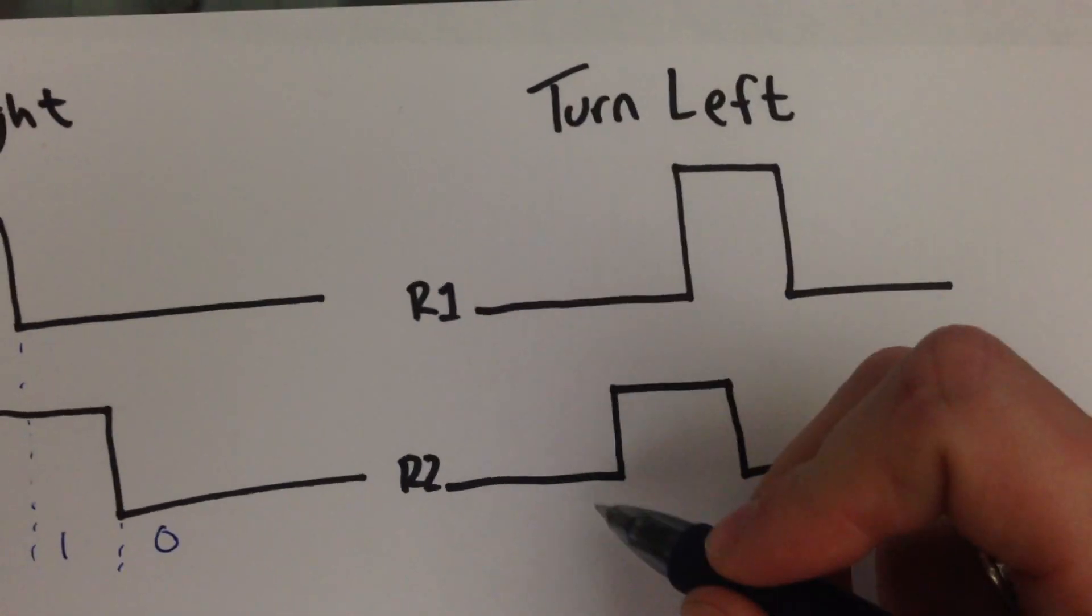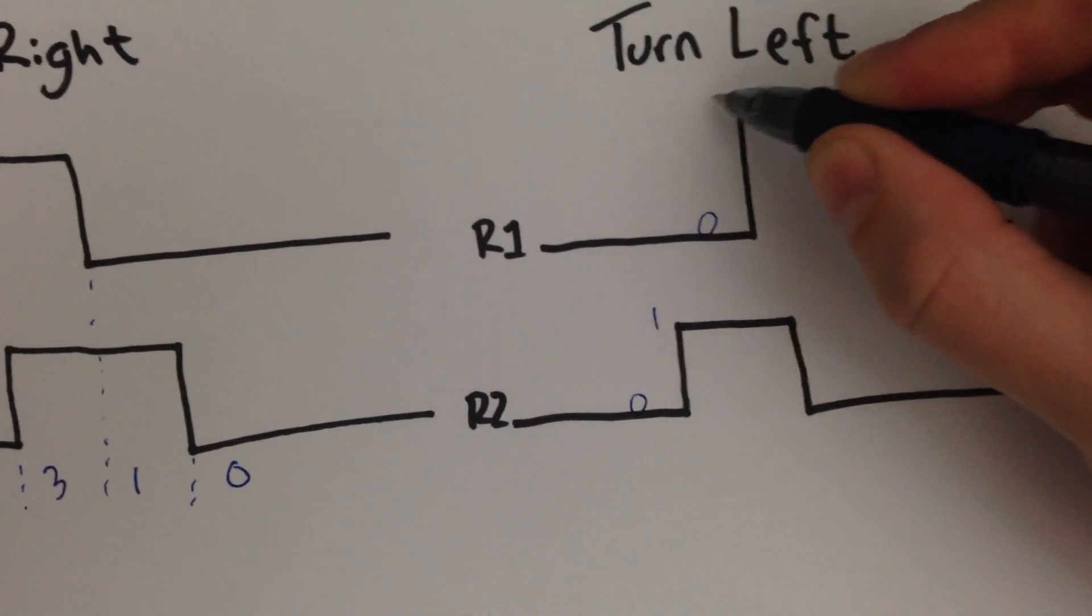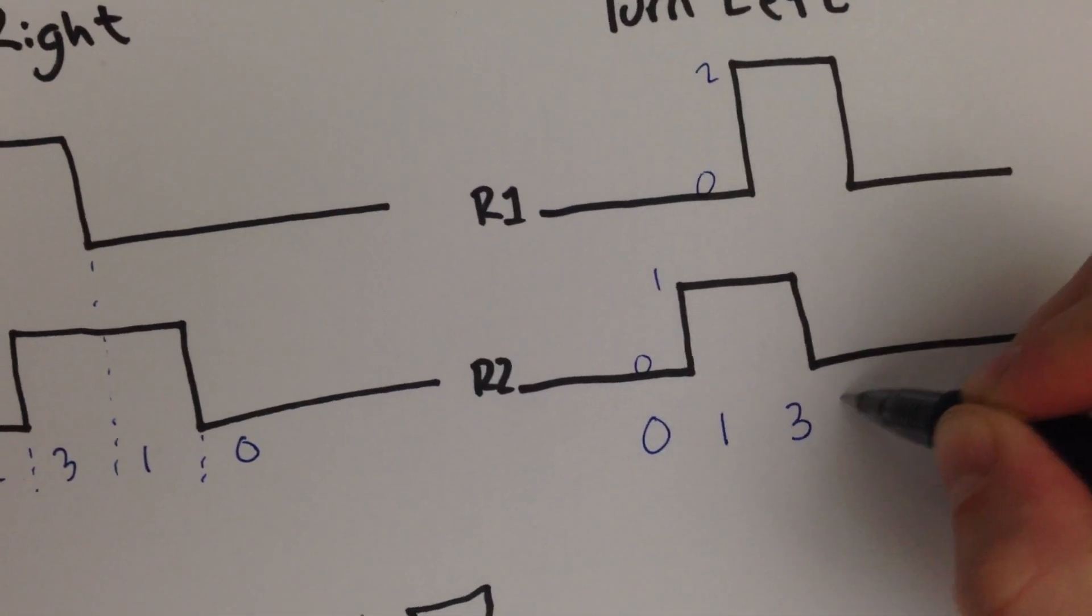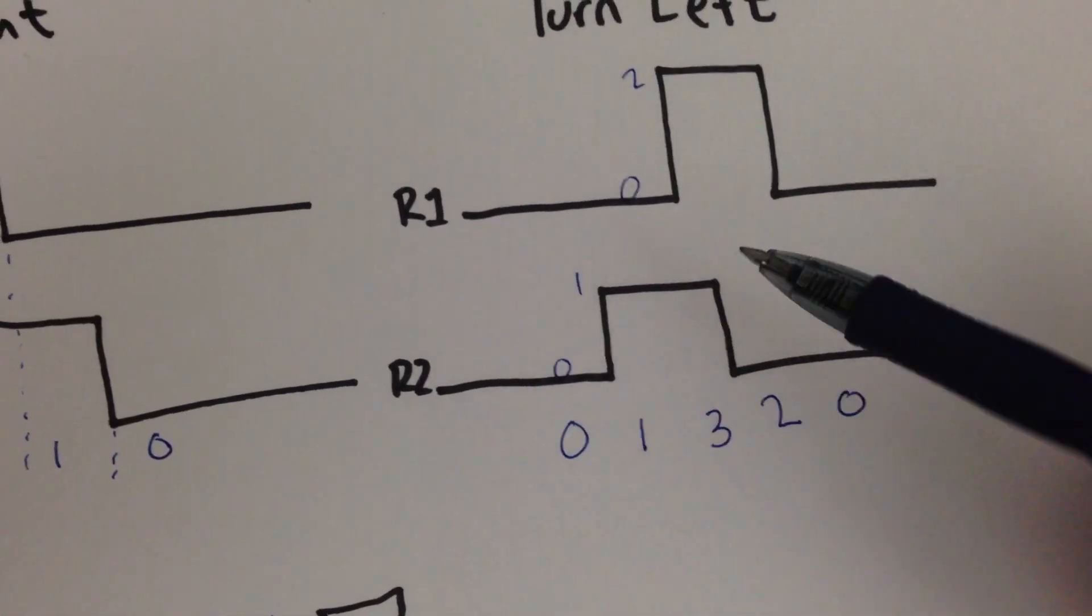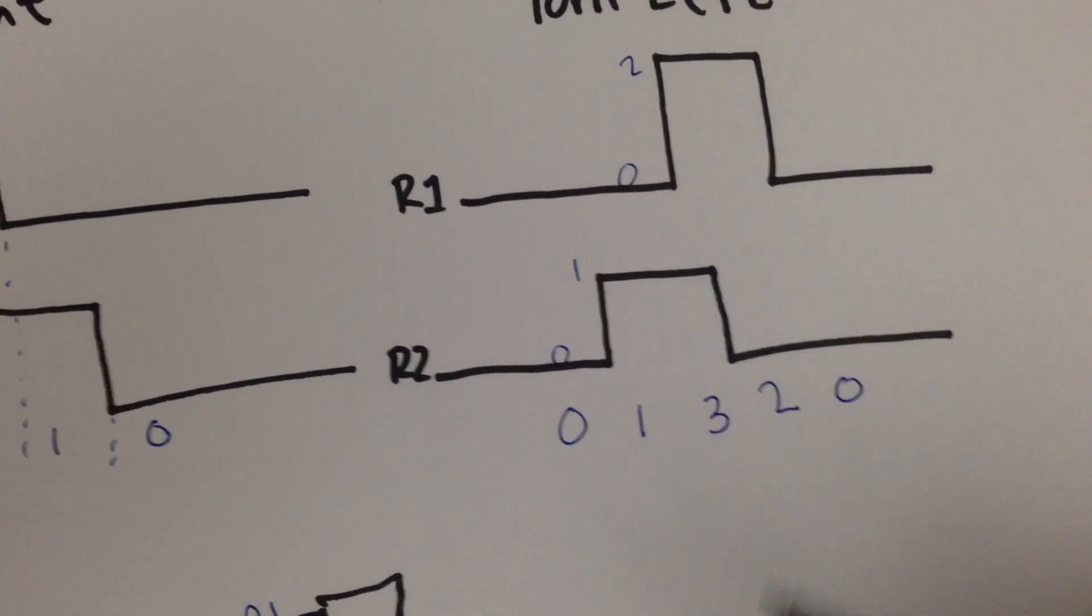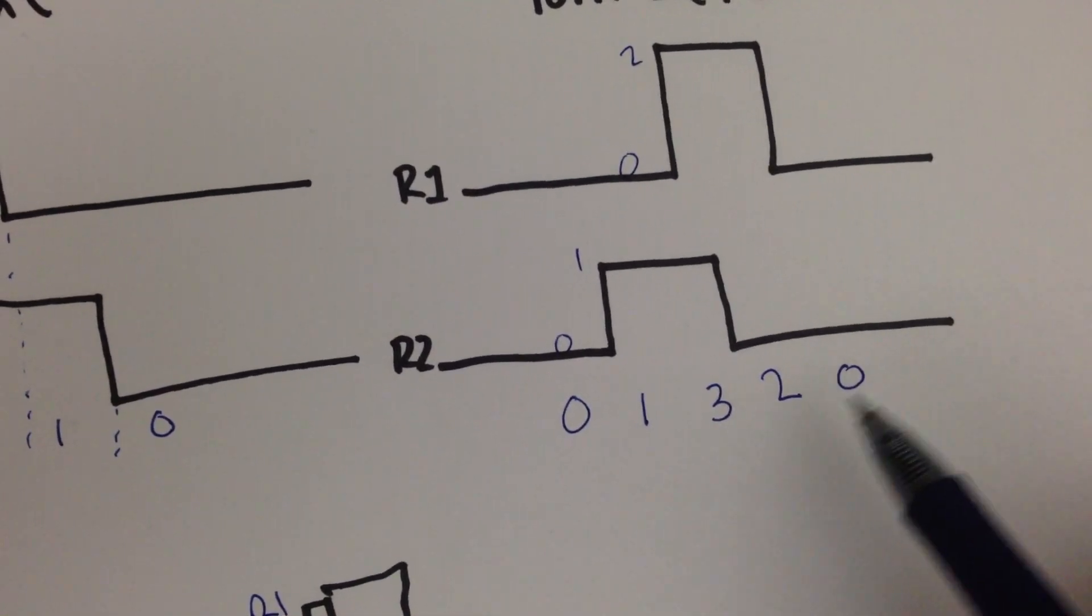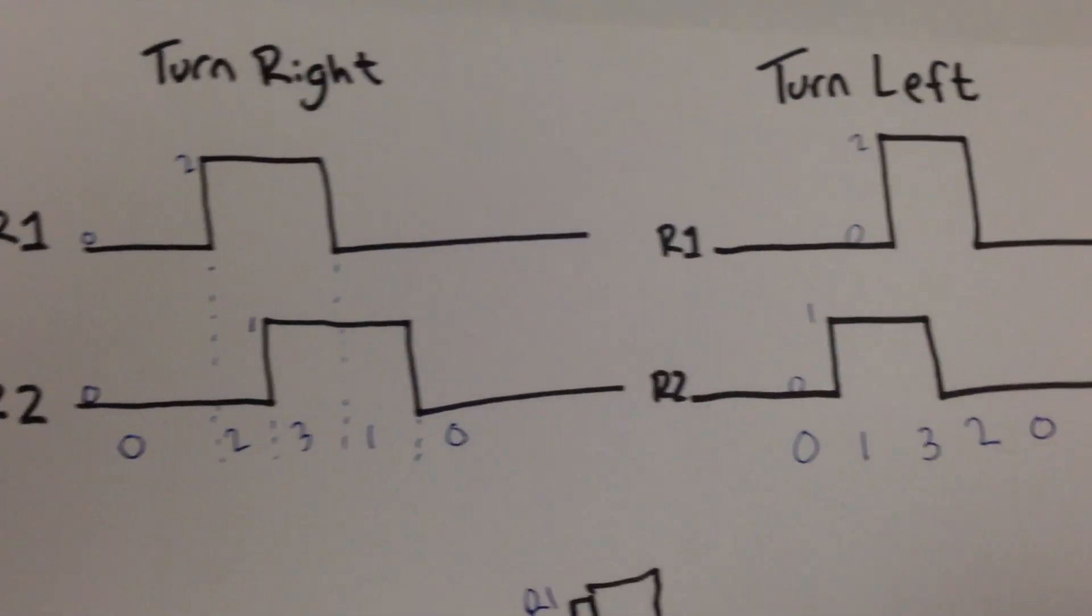So this would be the code if I move it to the right. If I turn it to the left, we have the same thing. If this represents 0 and this is 1, this is 0 and this is 2, we would have 0, 1, 3, 2, 0. So if I keep track of the state of these 2 pins over time, I can, after 5 digits are acquired, I can look at the last 5 digits and say, well, if it matches this pattern, it was turned to the left. If it matches this pattern, it was turned to the right.